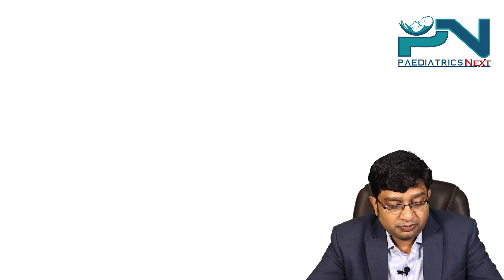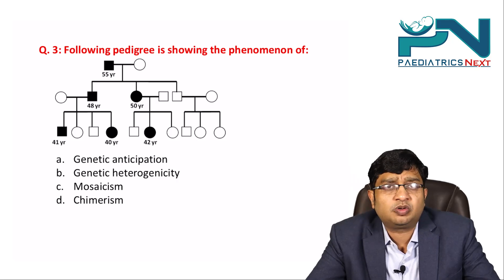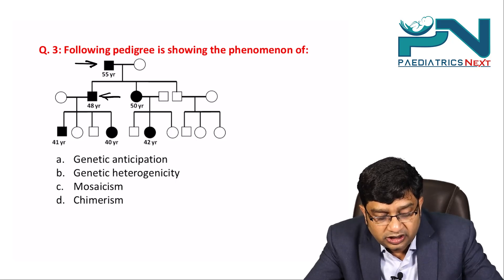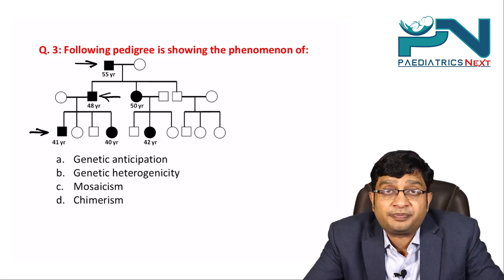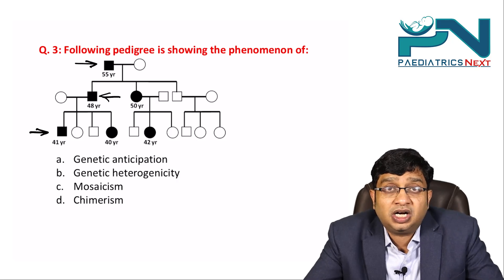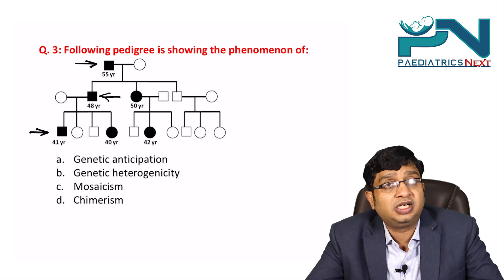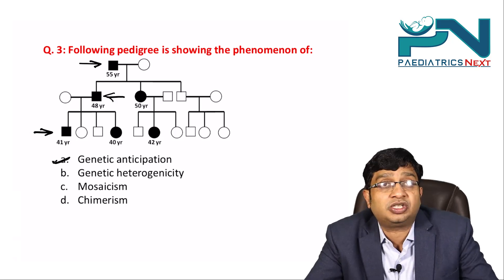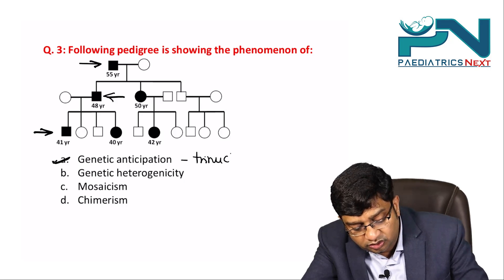Question three: the following pedigree shows which phenomenon? In this pedigree, the disease onset was at 55 years in one generation, 48 years in the next, and even earlier in successive generations. There is early age of onset of disease in successive generations — this is the phenomenon called genetic anticipation.